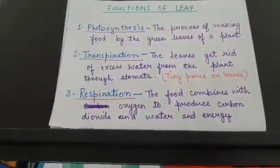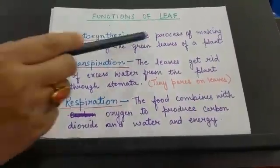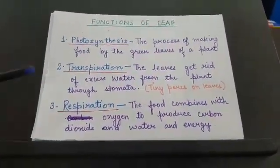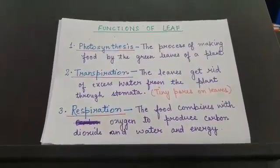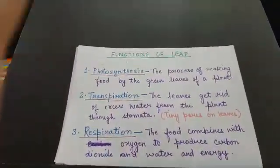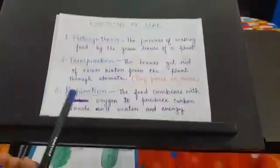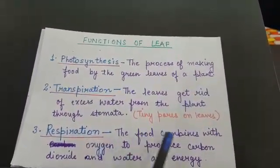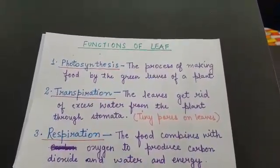Now let us know about the functions of leaf. The first function is photosynthesis — the process of making food by the green leaves of a plant. The second function is transpiration — the leaves get rid of excess water from the plant through stomata, which are tiny pores on leaves. The third function of the leaf is respiration. In respiration, food combines with oxygen to produce carbon dioxide and water, and energy is released.